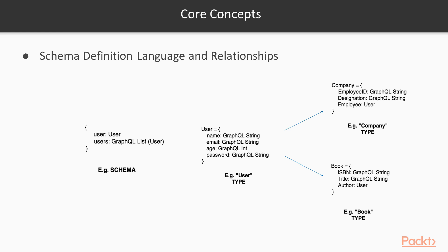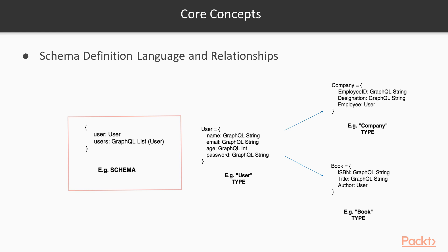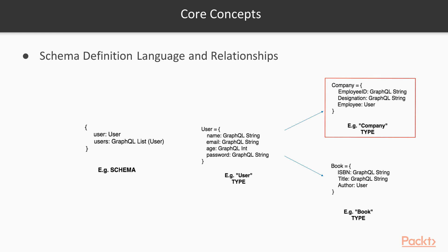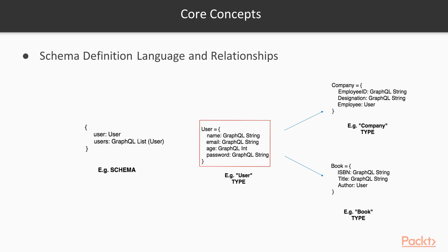Let's jump into the core concepts of GraphQL. GraphQL has its own type system that can be used to define schema on an API. The syntax for writing schema is called Schema Definition Language. Here is a schema example with a type called user, which has four fields: name, email, age, and password. There are two more types: company and book. Company is a type with a field called employee, whose type is user. Similarly, the book type has an author field with a type of user. This is how relationships can be established between types. There are also built-in GraphQL types like string and integer.